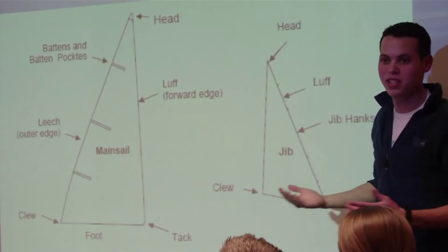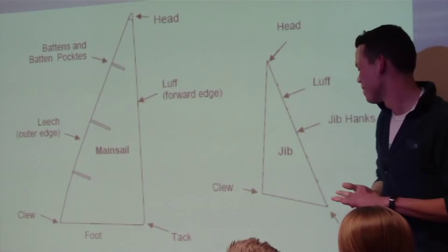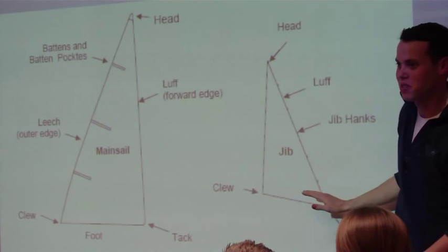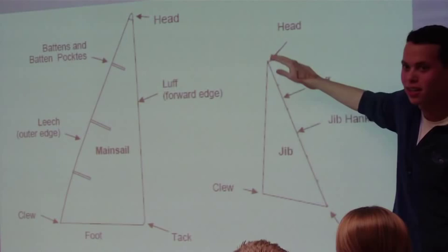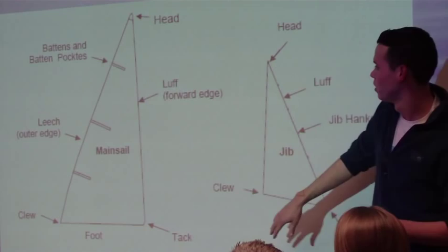Next we've got our jib. Our jib is—all these parts are going to be the same. So the luff, the leech, the foot, clew, the tack, and also the head. It's not going to be—it's going to be based on forward and aft as opposed to, we're going to learn here in a minute, where the mast is. So just remember, all these points are going to be the same on each sail.